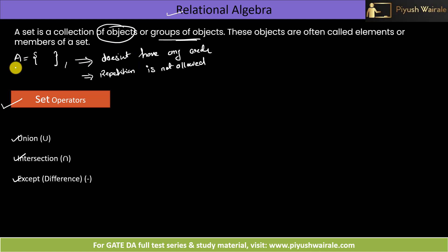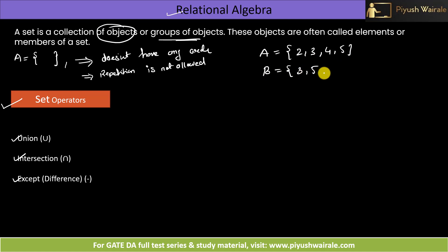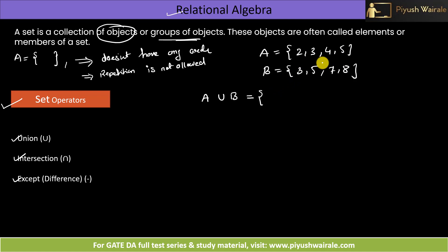I will discuss a few examples first based on set theory, then we can apply it to relational algebra. For example, consider set A = {2, 3, 4, 5} and set B = {3, 5, 7, 8}. What is A union B? It will consist of elements which are common to both sets — 3 and 5 — plus the remaining elements from both sets: 2, 4 from A and 7, 8 from B.